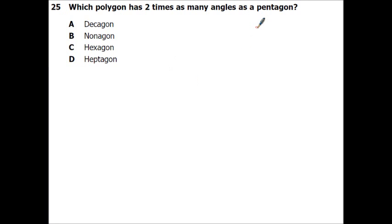Which polygon has 2 times as many angles as a pentagon? So we said before, all polygons have the same amount of sides as they do angles. So a pentagon has 5 angles. So therefore, I'm looking for something with 10 angles. A decagon has 10. A non-teagon has 9, X has 6, and a heft has 7. So that is a decagon.